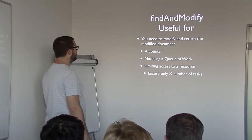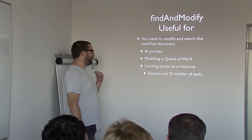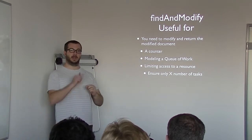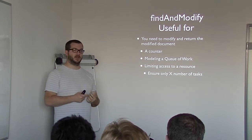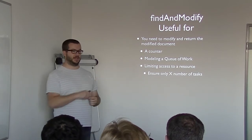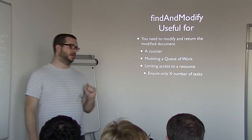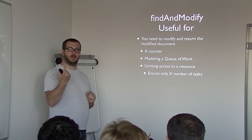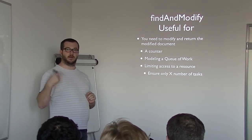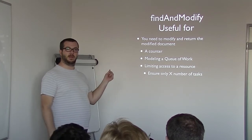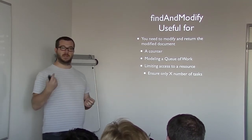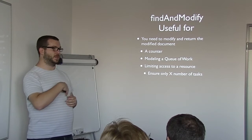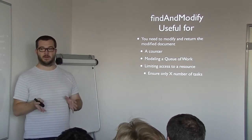So when is Find and Modify useful? Things like a counter — say you're doing an incremental counter and you want to make sure nothing else is incrementing it at the same time. You have a counter with a value of 1 and you want to make sure you get the next one in the sequence. You increment it by 1 and make sure nothing else is incrementing it while you do so. Then Find and Modify is the right thing, because you'll always get the right count — you're locking, updating the counter, getting the result back, and nothing else is updating that counter while the operation runs.